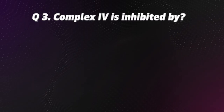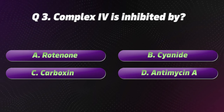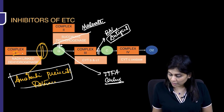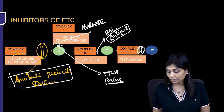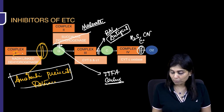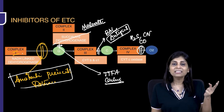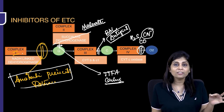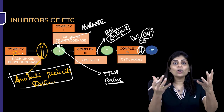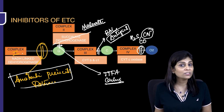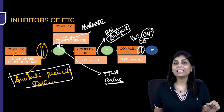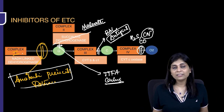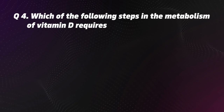Question 3. Complex IV is inhibited by: A. Rotenone, B. Cyanide, C. Carboxyl, D. Antimycin A. The correct option is B, Cyanide. Electron transport between complex IV and oxygen is inhibited by hydrogen sulfide, cyanide, and carbon monoxide — all common poisons. Cyanide inhibits electron transport between complex IV and oxygen, so tissues cannot use oxygen, which is called histotoxic hypoxia.